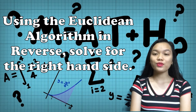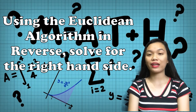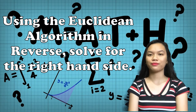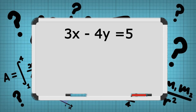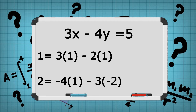Second step: using the Euclidean algorithm in reverse, we will find and solve the right-hand side of the equation. From the solution in the previous step, we start with GCD 1 equals our B, which is 3, multiplying by 1 to keep 3 in the equation, minus 2 times 1. Next, starting from the remainder 2 equals negative 4, which is B, times 1, minus 3 times negative 2.